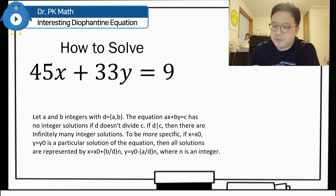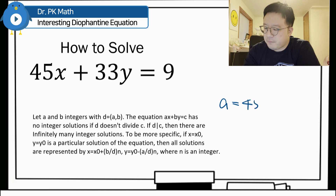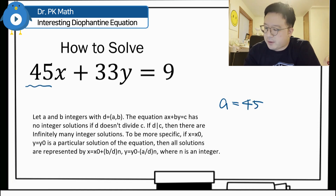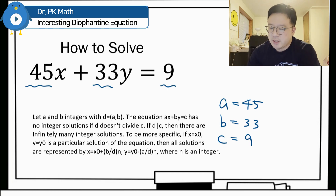So for this question, we can identify a equals 45, b equals 33, and c equals 9. This is what we will use on the next slide.